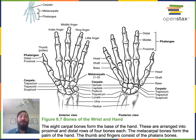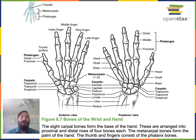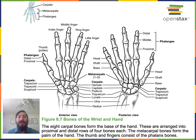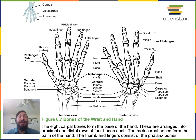In the carpal region, there are eight short bones known as the carpals, organized into two rows of four. The four proximal carpals are known as the scaphoid, lunate, triquetrum, and pisiform. The four distal carpals are known as the trapezium, trapezoid, capitate, and hamate. The proximal row of carpals contacts the distal end of the radius, while the distal row of carpals contacts the metacarpals.